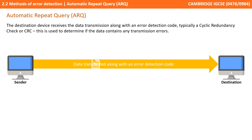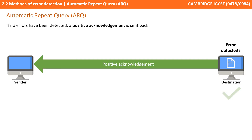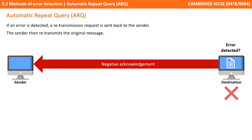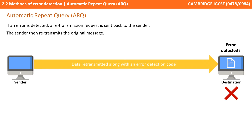The destination device receives the data along with an error detection code, typically a cyclic redundancy check or CRC. This is used to determine if the data contains any transmission errors. If no errors have been detected, a positive acknowledgement is sent back. If an error is detected, a retransmission request is sent back to the sender and the sender then retransmits the original message.